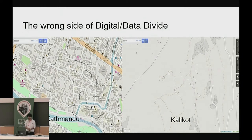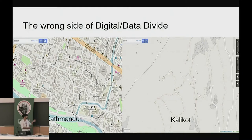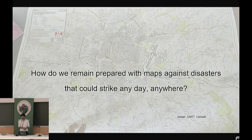The data divide — a culmination of the digital divide, which itself is probably a result of the economic divide — is not very favorable to places like Kailali, which is a remote district in Nepal. But as you can see, for big cities like Kathmandu, the availability of map data even in OpenStreetMap is very good.